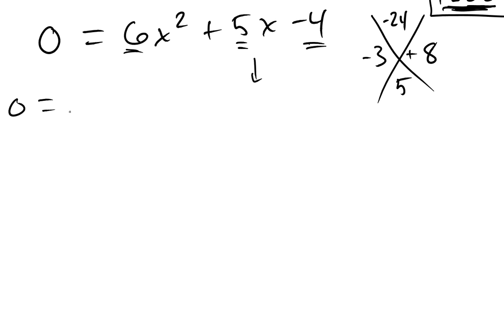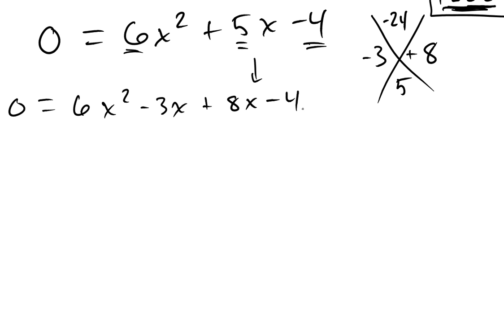So this becomes 6x squared minus 3x plus 8x minus 4. Now I deploy factoring by grouping.